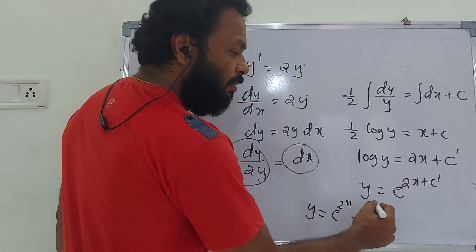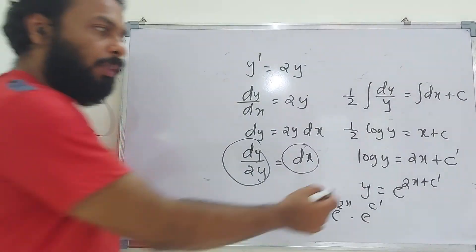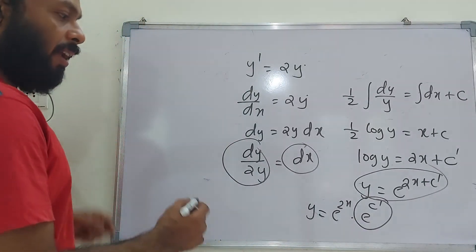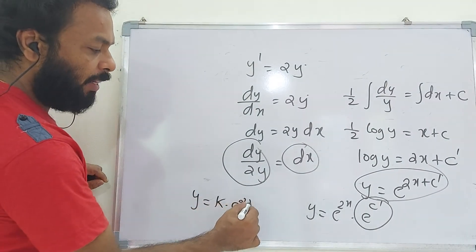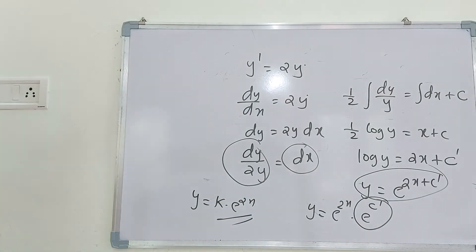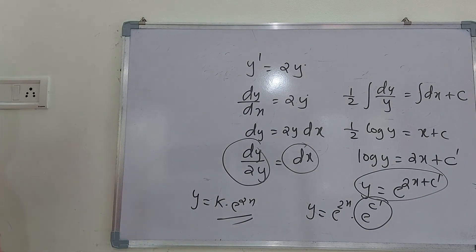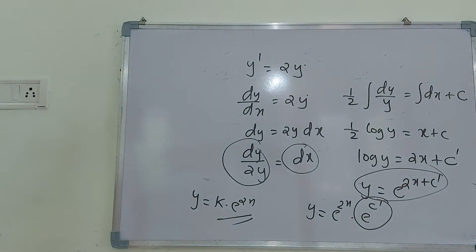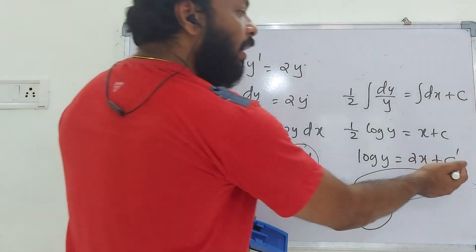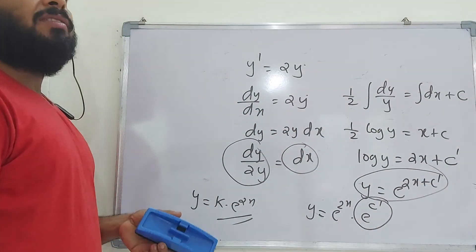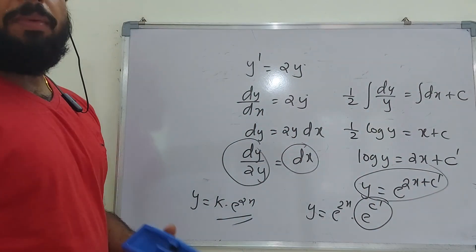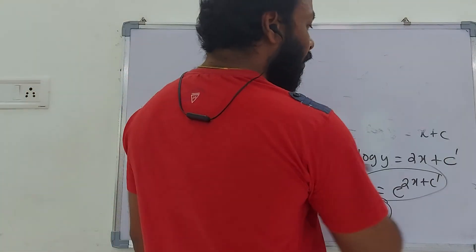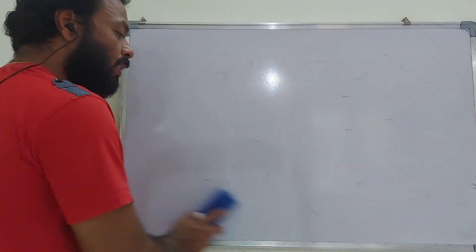From (1/2)·log y = x + c, we get y = e^(2x + 2c) = e^(2x)·e^(2c). Letting e^(2c) = c' (a new arbitrary constant), the general solution is y = c'·e^(2x). Solutions of first-order ODEs will be discussed further in the next class.